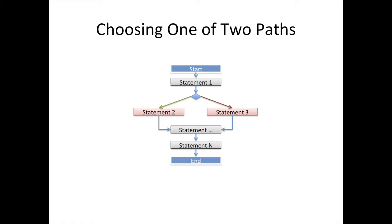Another thing you might do is: when you get to a certain part of the program, if the condition is true you do statement 2, but if it's false you do statement 3. In this case you're doing one or the other. As your program runs, one of these two paths will be executed — which one depends on the current condition being evaluated, whether that's some input or whatever.